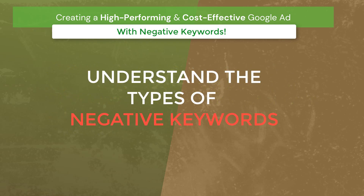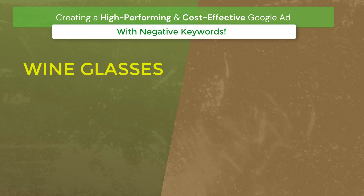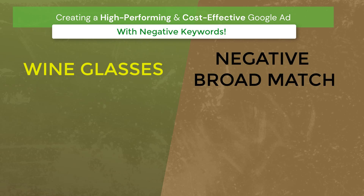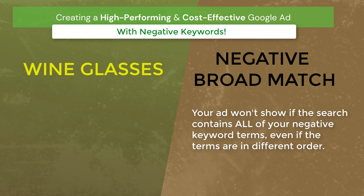Let's look at some of the types of negative keywords. For example, let's say you own a store that sells glasses, like sunglasses. But for your ad, you want to have wine glasses as your negative keyword — you don't want your ad to run if somebody did a search for wine glasses. You can add wine glasses as a negative broad match, which means if both words, wine and glasses, appear in someone's search in any order, your ad won't show.